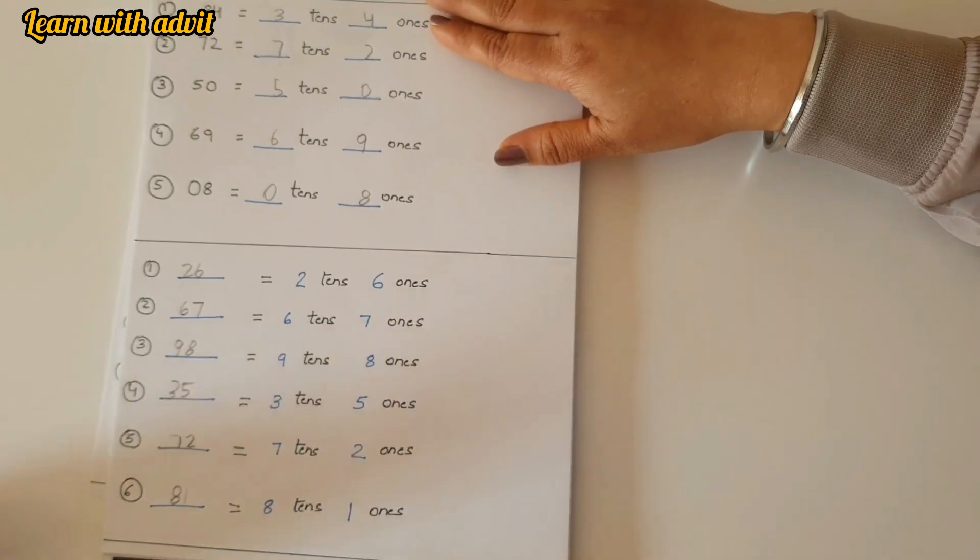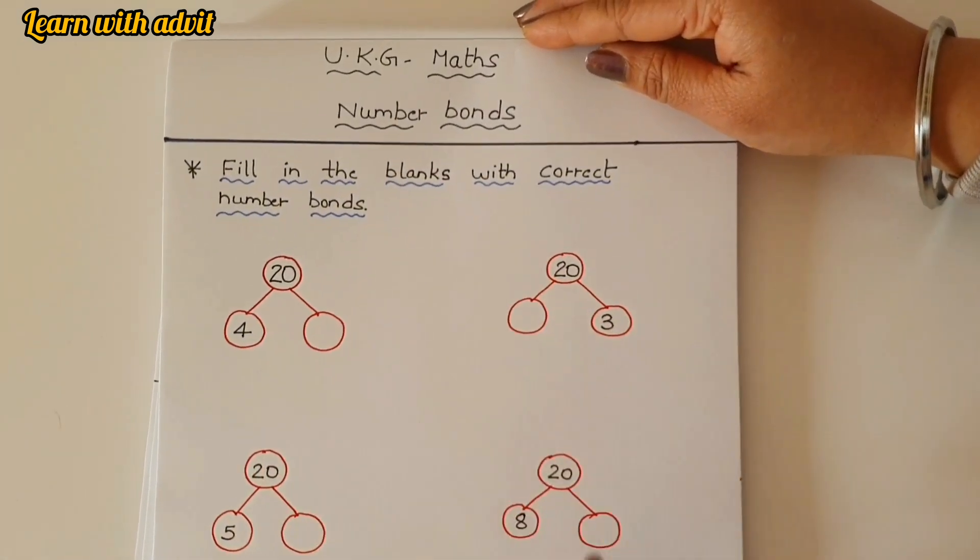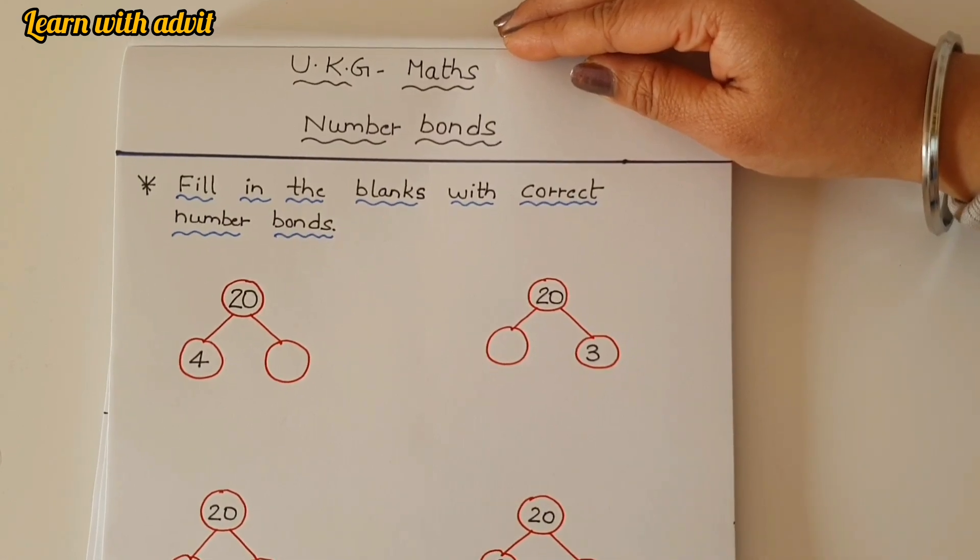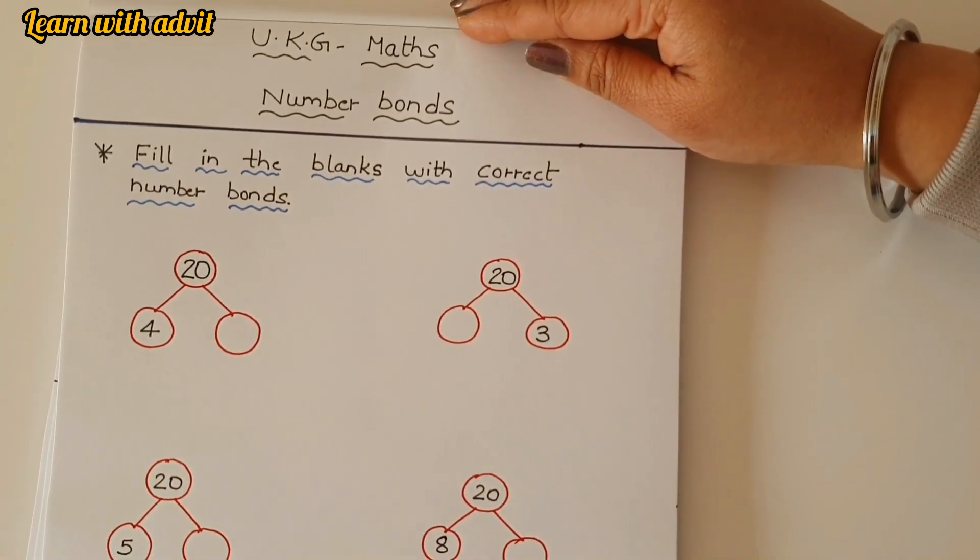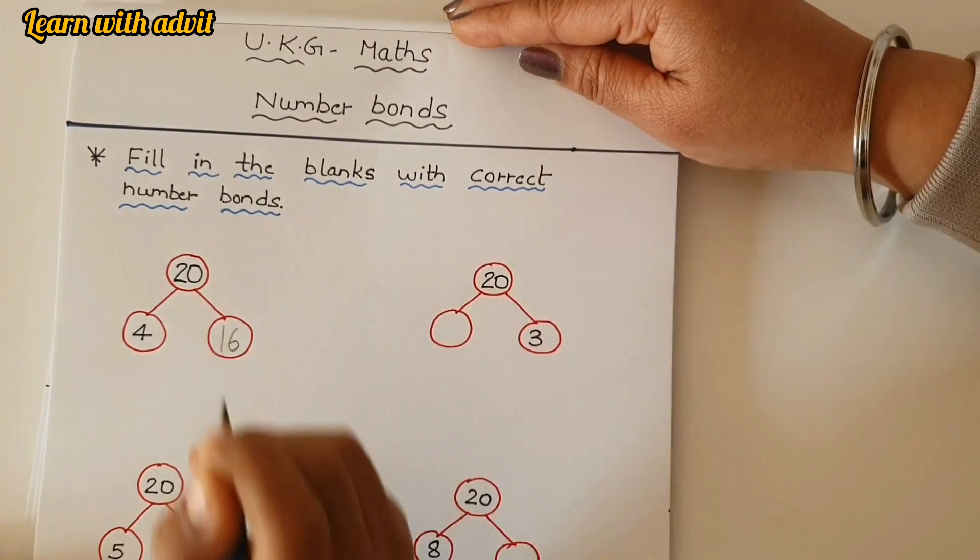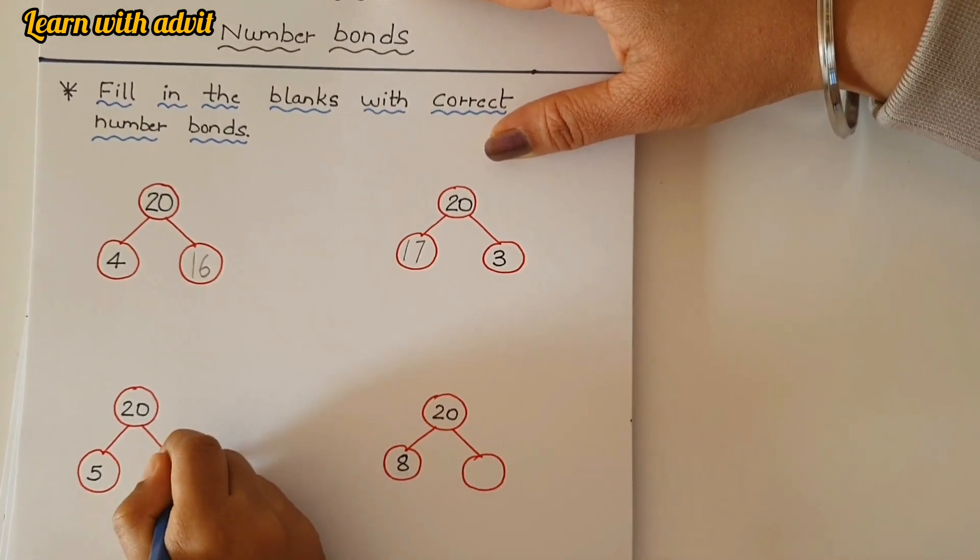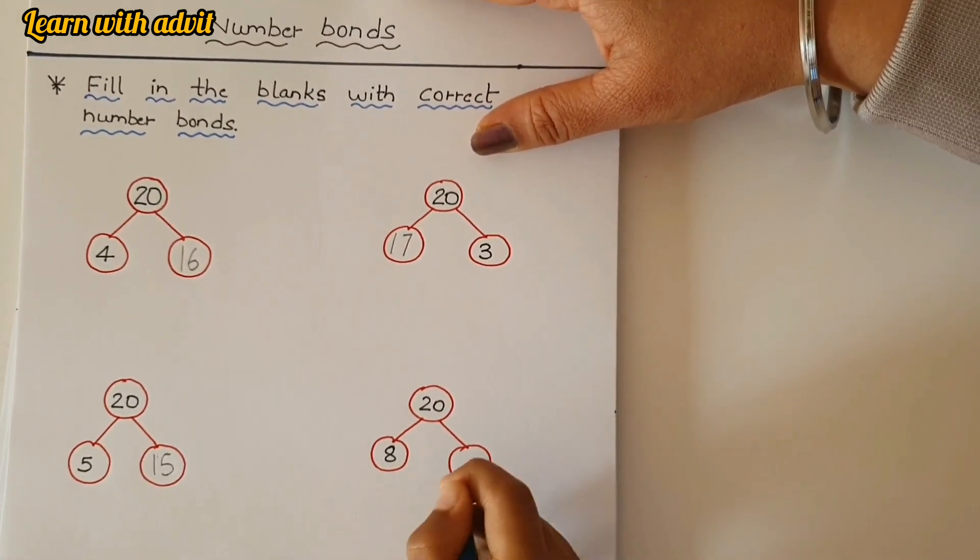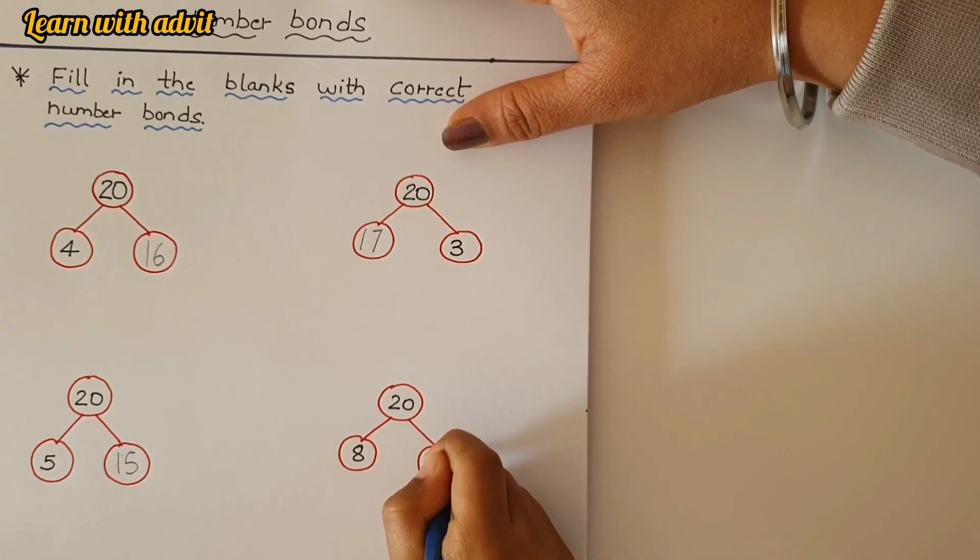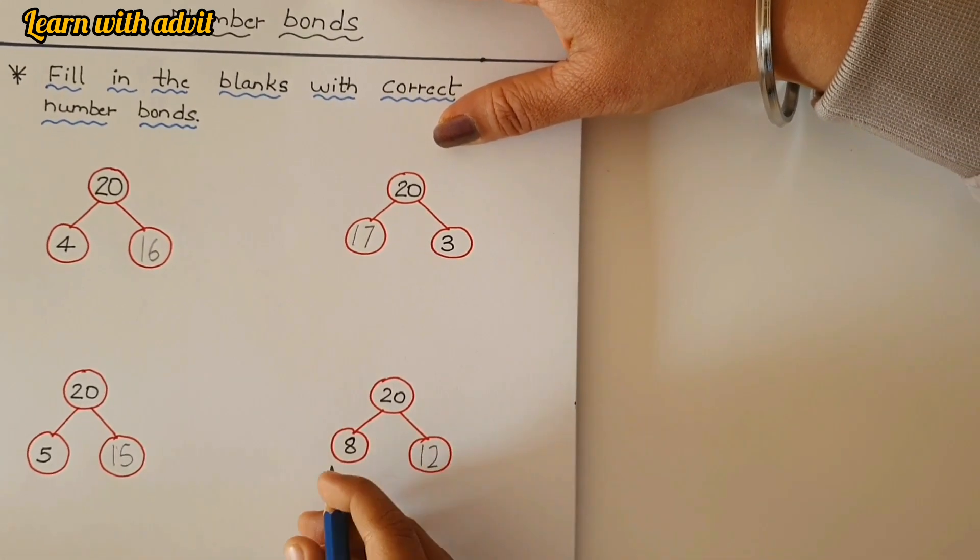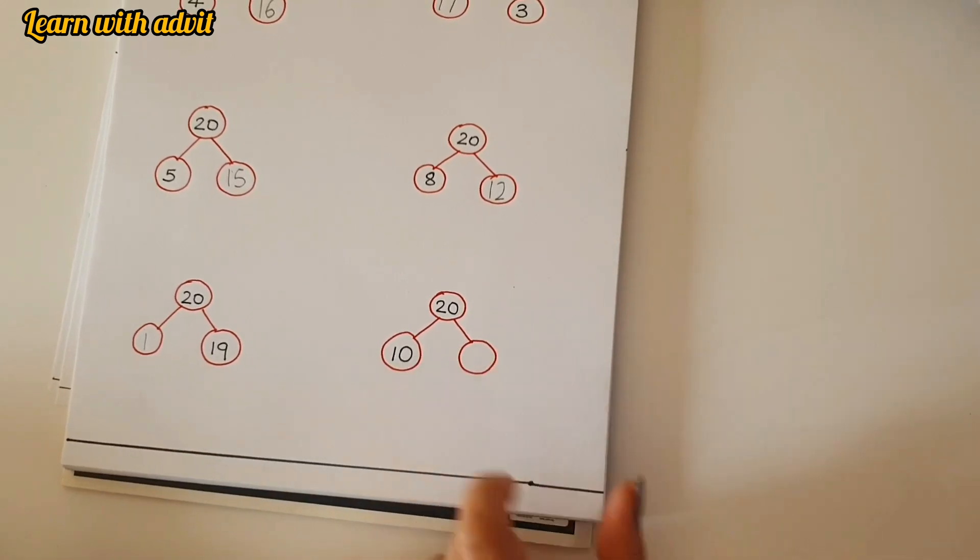So this is again your favorite, right? Number bonds. You have to fill the numbers. Here all the numbers are twenty, and you have to fill it with the proper number. Twenty we can make in various ways. Twenty, four and sixteen. Yes. And twenty with three, seventeen. Okay. Twenty five, fifteen. Twenty eight, twelve. Yes, it's simple, you have to just minus it. Twenty with nineteen, one. Ten again, ten. Yeah, very good.